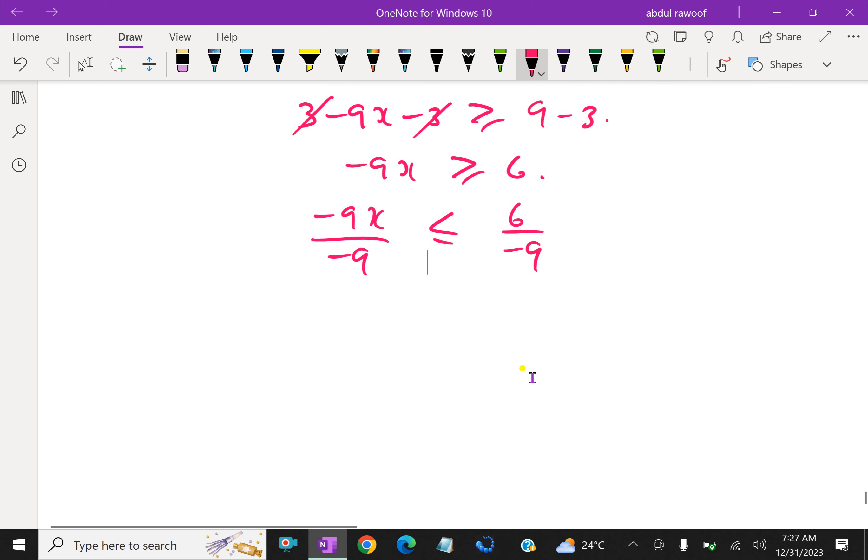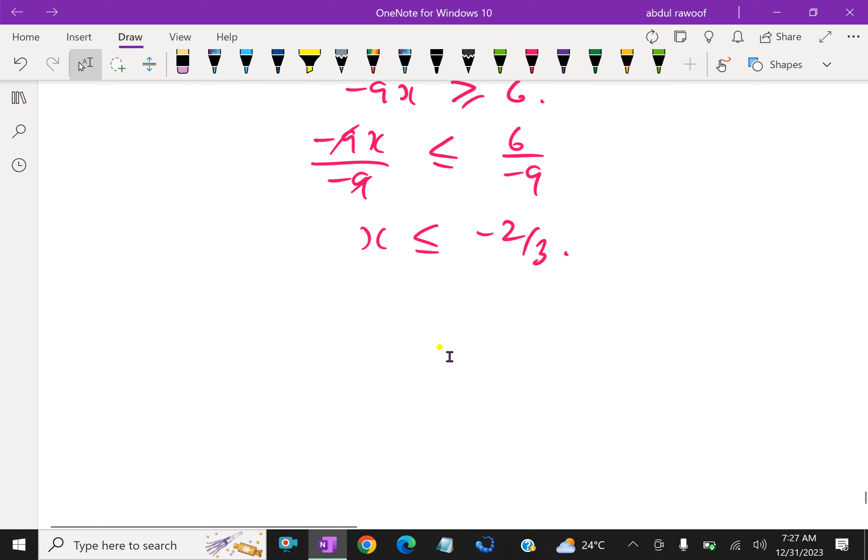Interchange the sign because we are dividing by a negative number. So which represents x is less than or equal to minus 2 over 3. So how to represent on the number line? Look at here. This is 0, let it be minus 2 over 3 at this point.